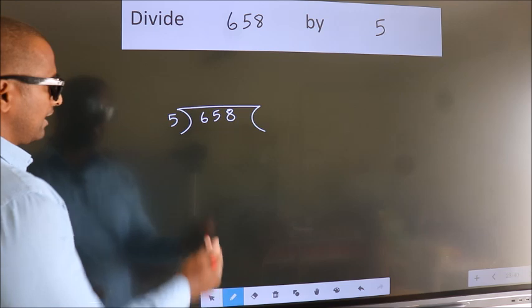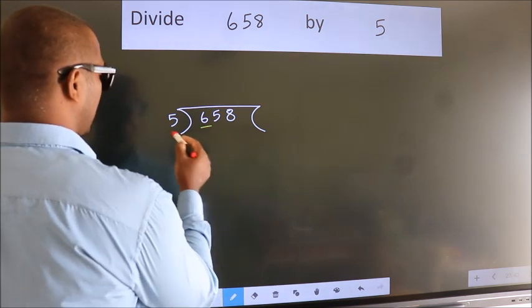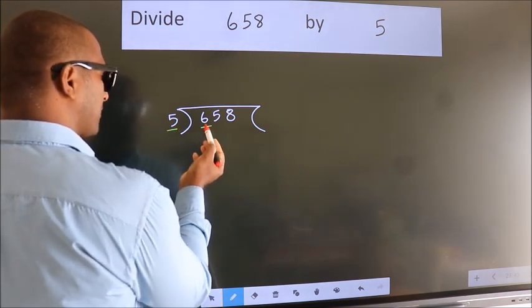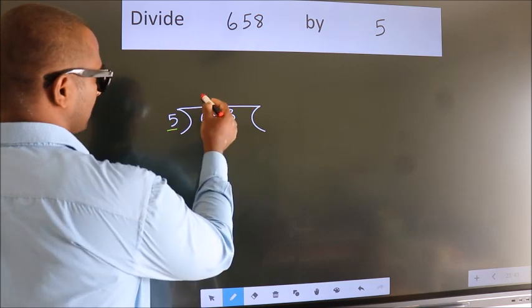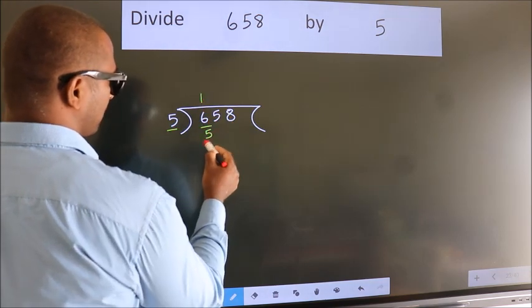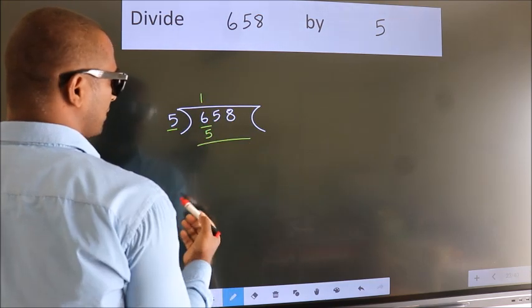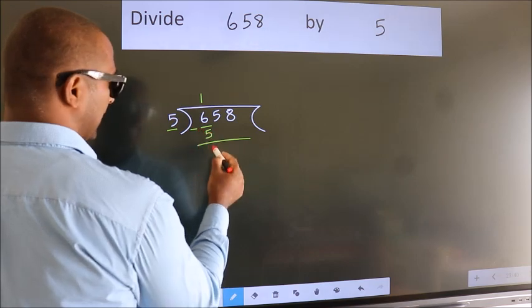Next, here we have 6, here 5. A number close to 6 in the 5 times table is 5 once 5. Now we should subtract. We get 1.